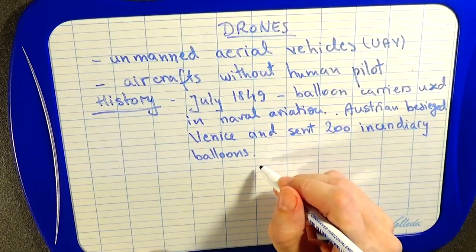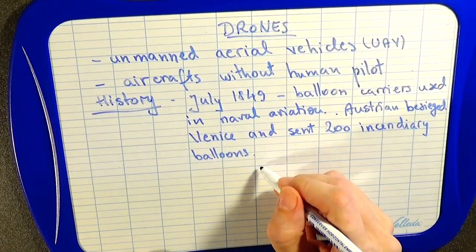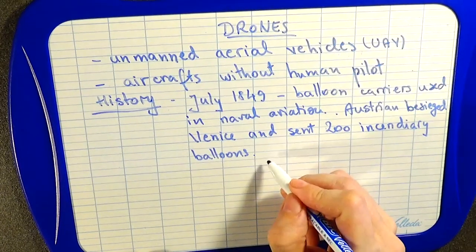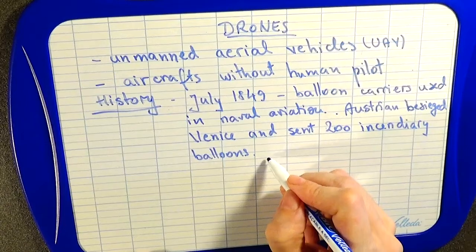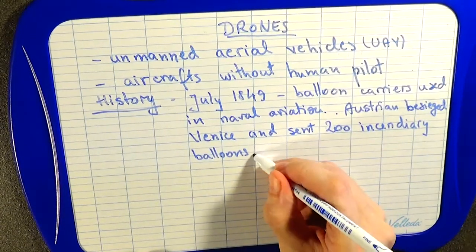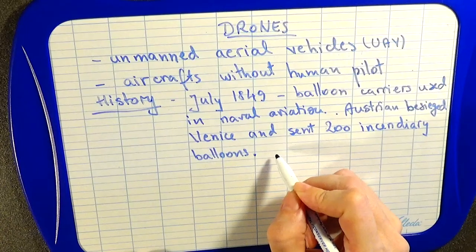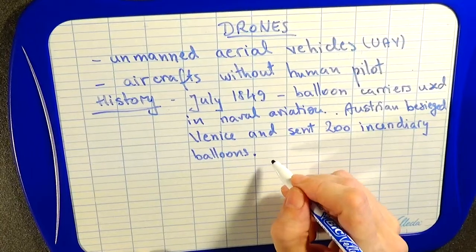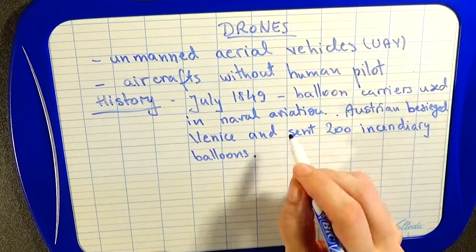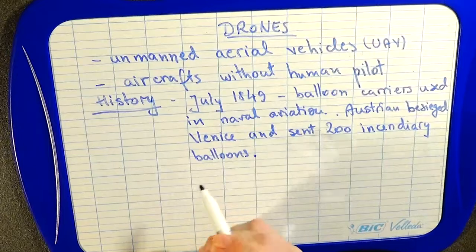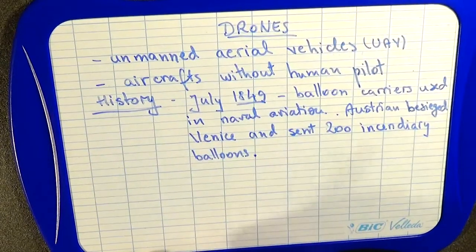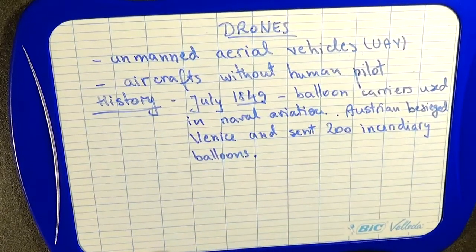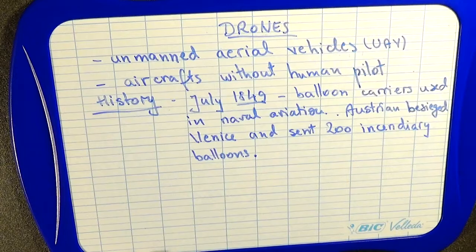They were launched partly from land and some were launched from the Austrian ship SMS Volcano. At least one of those incendiary balloons fell into the city of Venice, but most of them were directed to other places because of the wind. So it looks like this mission from 1849 didn't really go like planned because of the wind, but it was the first attempt at creating an unmanned aerial vehicle.